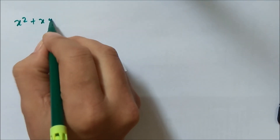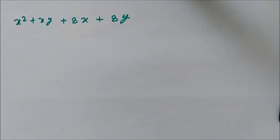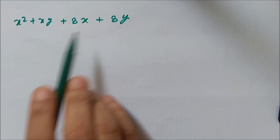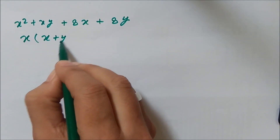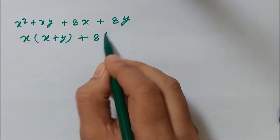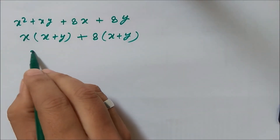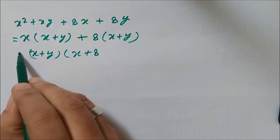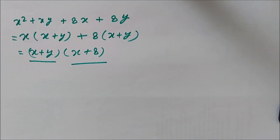Let us take another algebraic expression: x squared plus xy plus 8x plus 8y. If we look at regrouping, we see that x is common in the first two terms, and 8 is common in the last two terms. Taking x common from the first two gives x into x plus y. Taking 8 common from the last two gives 8 into x plus y. Now x plus y is common in both groups. Taking x plus y out gives x plus y into x plus 8. So the factors are x plus y and x plus 8. This is the method of factorization by regrouping.